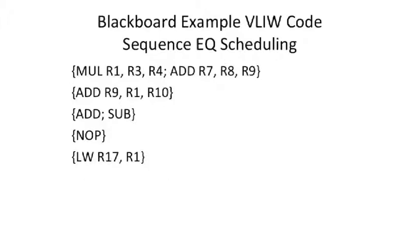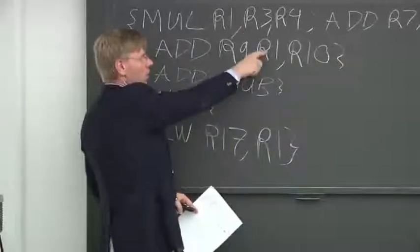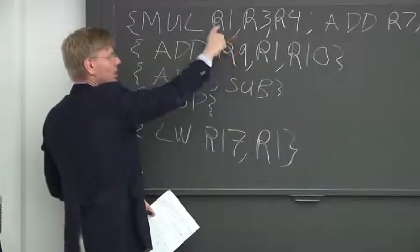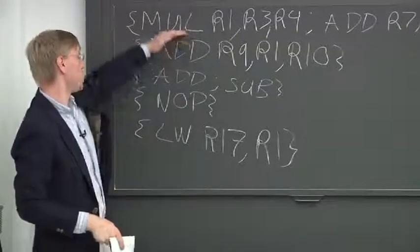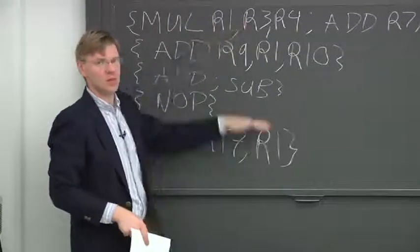If we were to try and take the same piece of code and run it in an LEQ model, the main difference is this add here, which reads r1, would not be allowed in the shadow here. So the shadow of this multiply or the delay of the multiply.